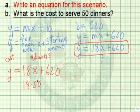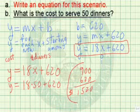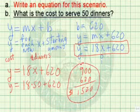Since there's no symbol here, we assume it means multiply. So in order to determine our answer, we take 18 times 50. So we have 900 plus 620, and we're left with $1,520 for the cost to serve the 50 dinners.